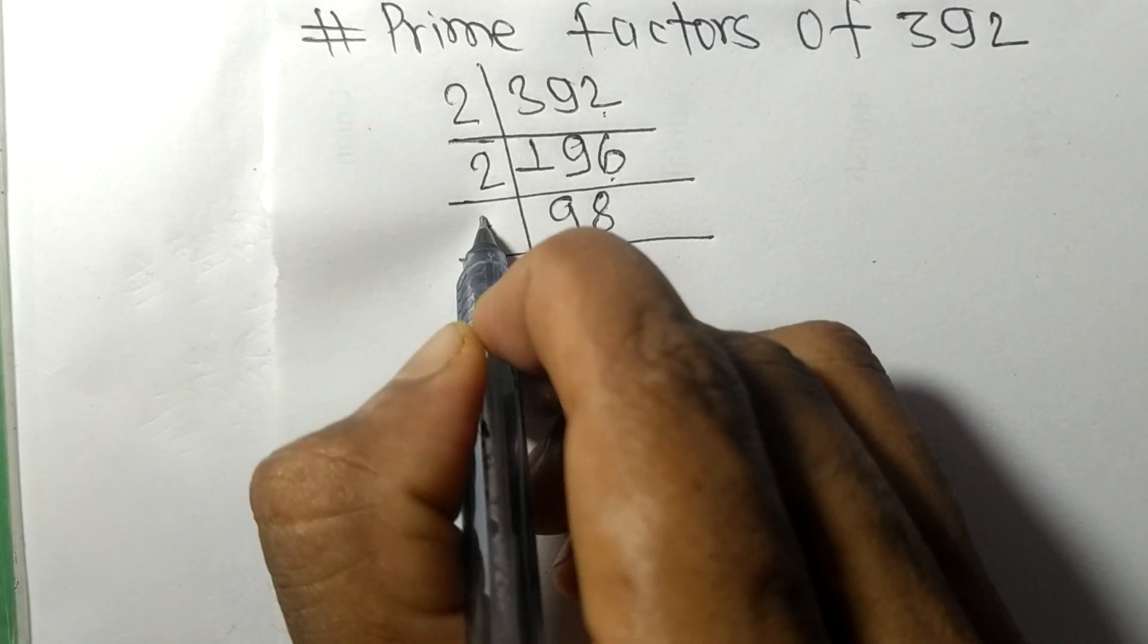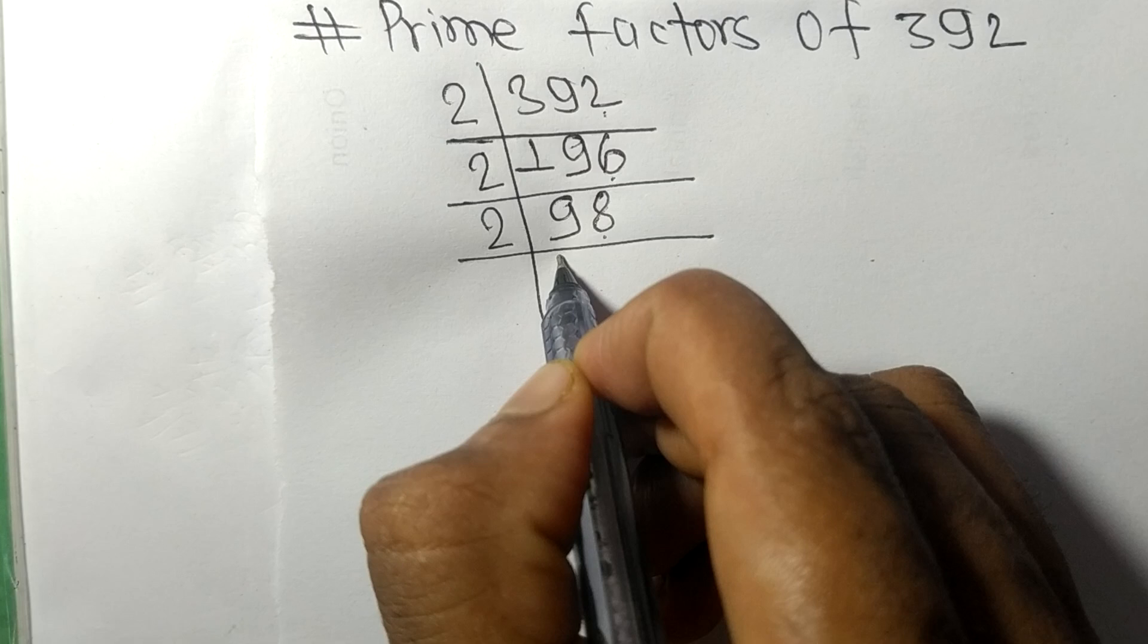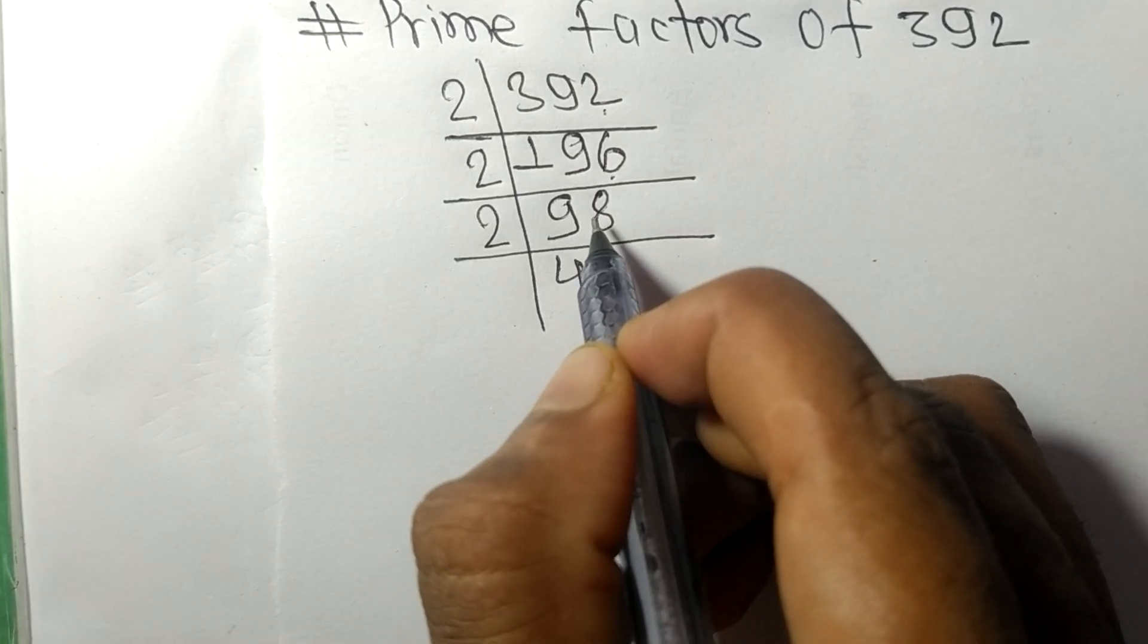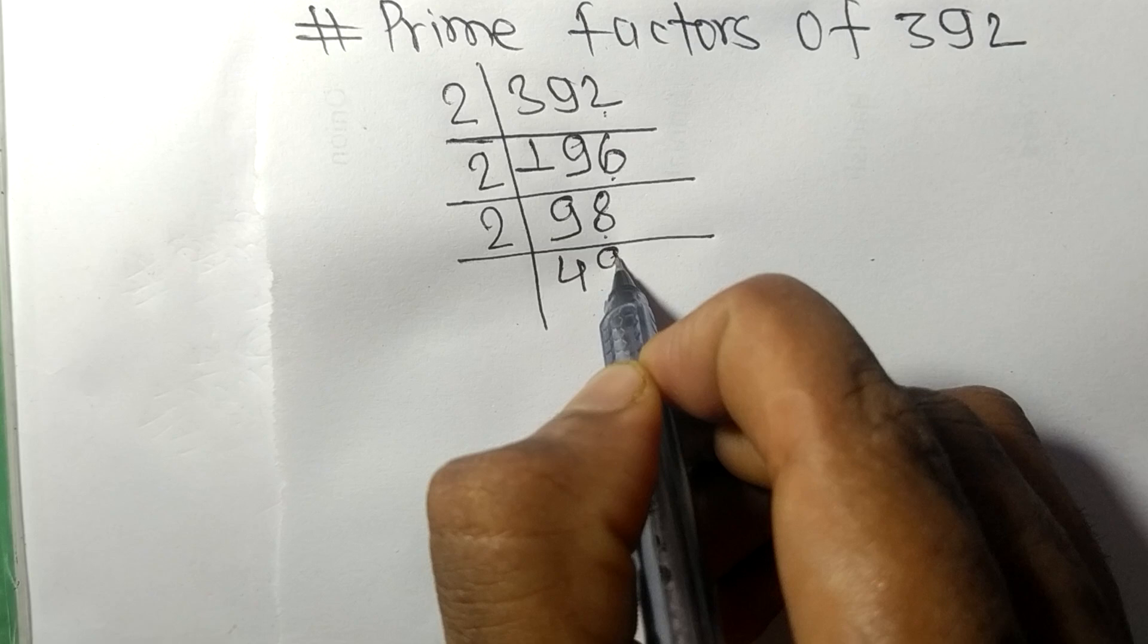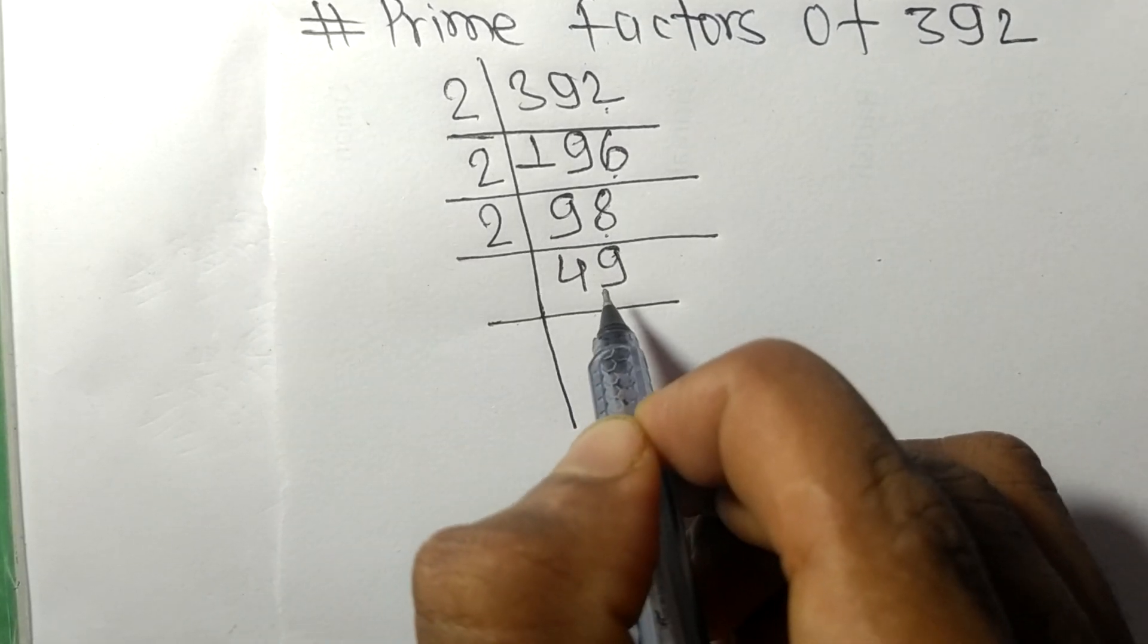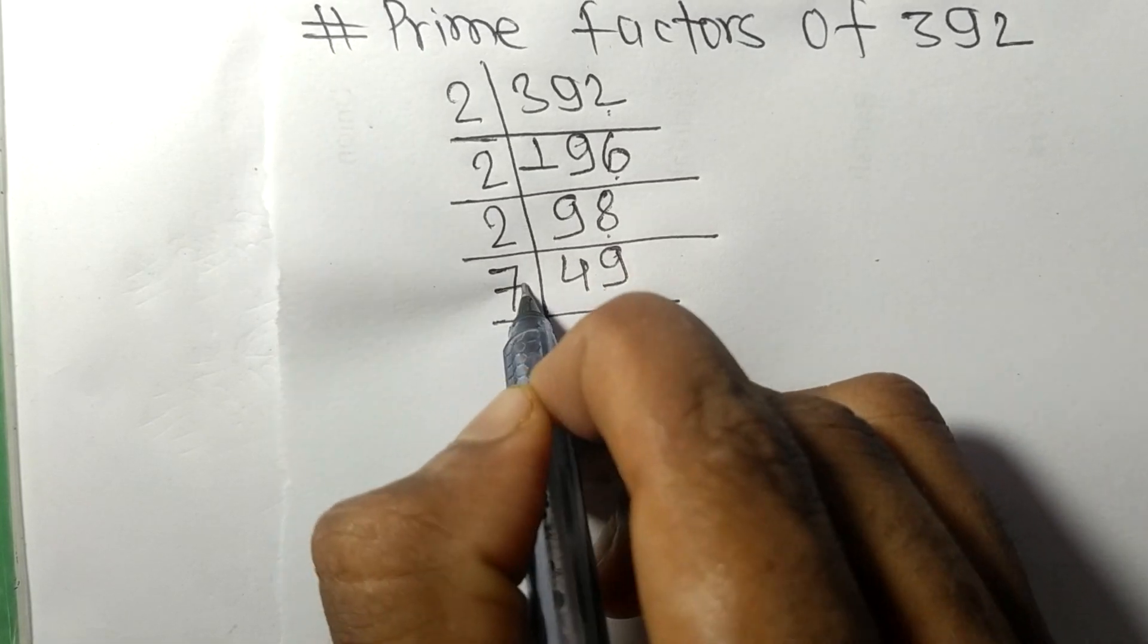98 is divisible by 2. Two times four equals eight, remainder one. One eight is eighteen. Two times nine equals eighteen. Now we got 49, which is divisible by 7.